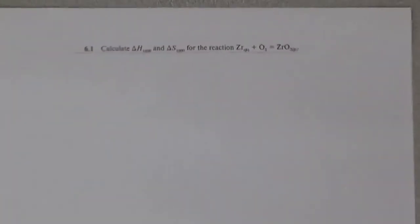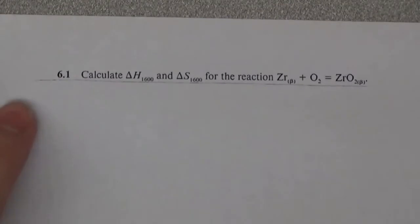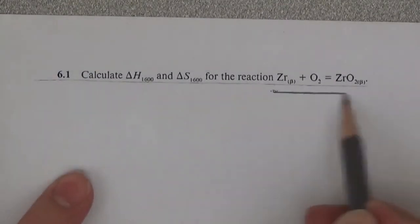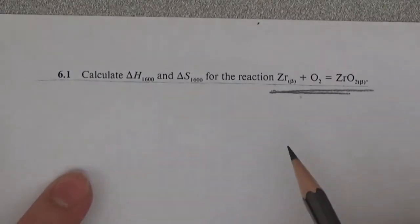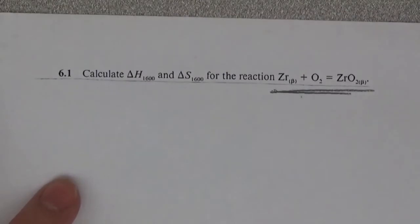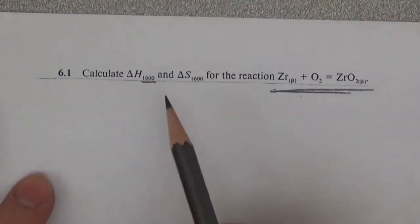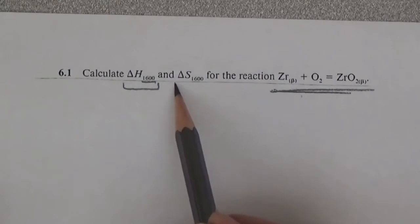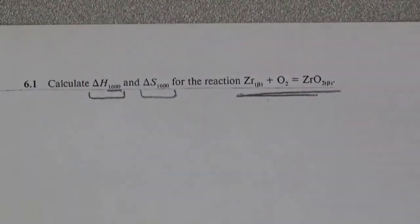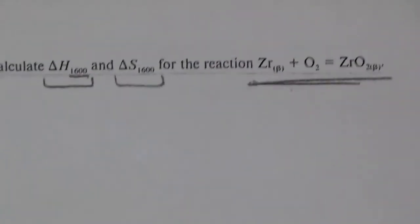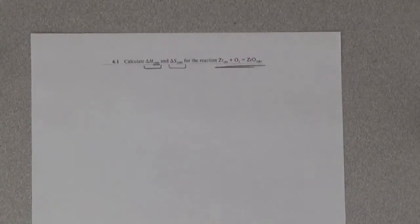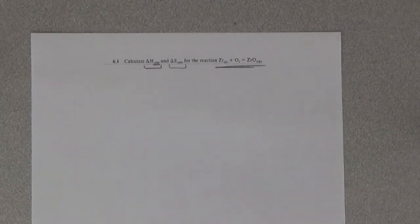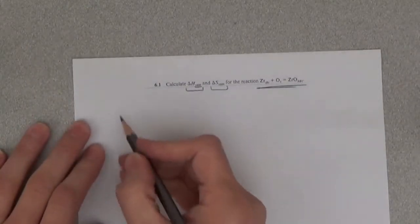Problem 1.6 in the textbook: we want to consider the chemical reaction forming zirconia, beta zirconia, at 1600 K and we want to calculate the change in enthalpy and entropy for this reaction to occur. This is going to be a fairly straightforward calculation, although a little bit lengthy with a few tricks along the way. Let's start out with the enthalpy.